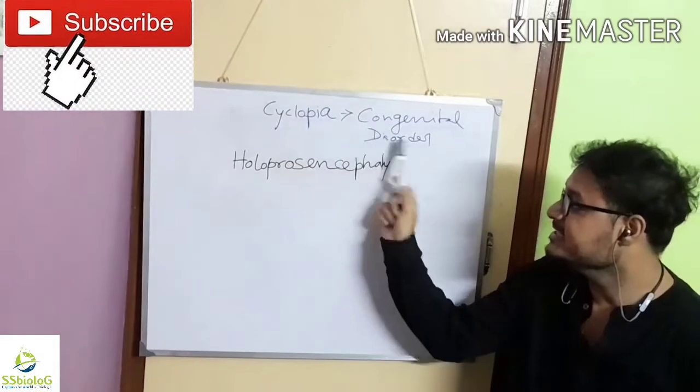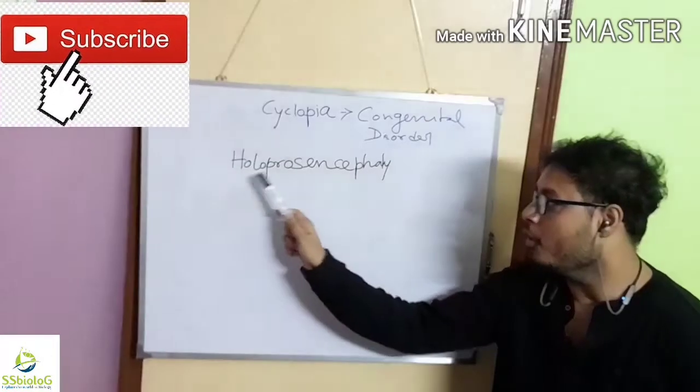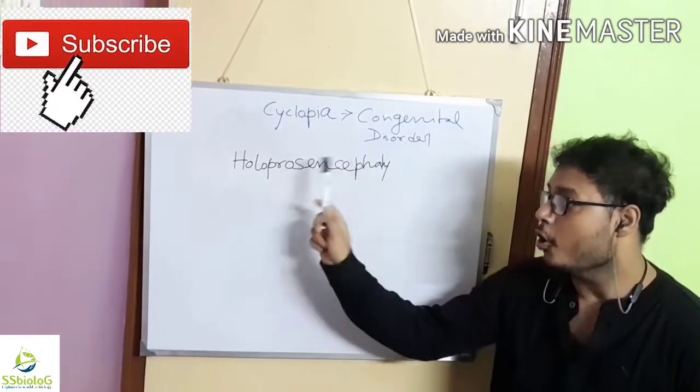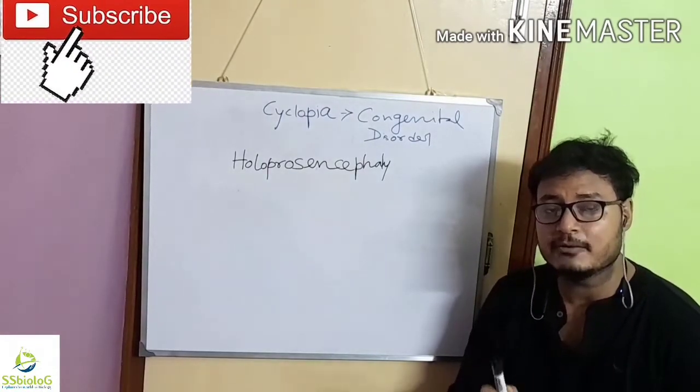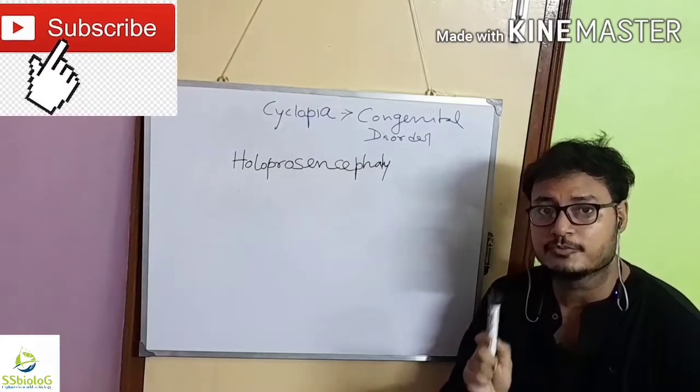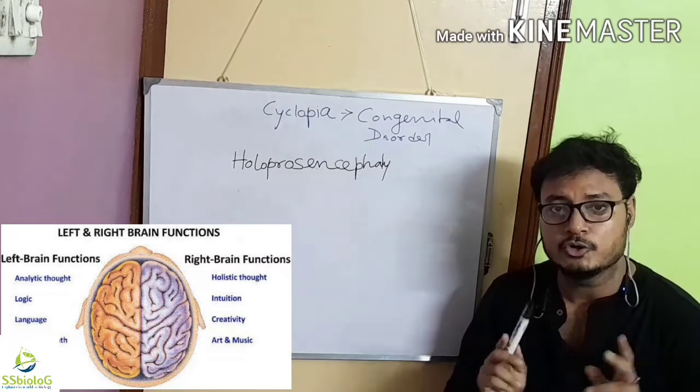So, cyclopia is a congenital disorder. It is the most extreme form of holoprosencephaly. Holoprosencephaly is a cephalic disorder in which the developing embryo fails to produce two hemispheres. We all know we have two hemispheres.